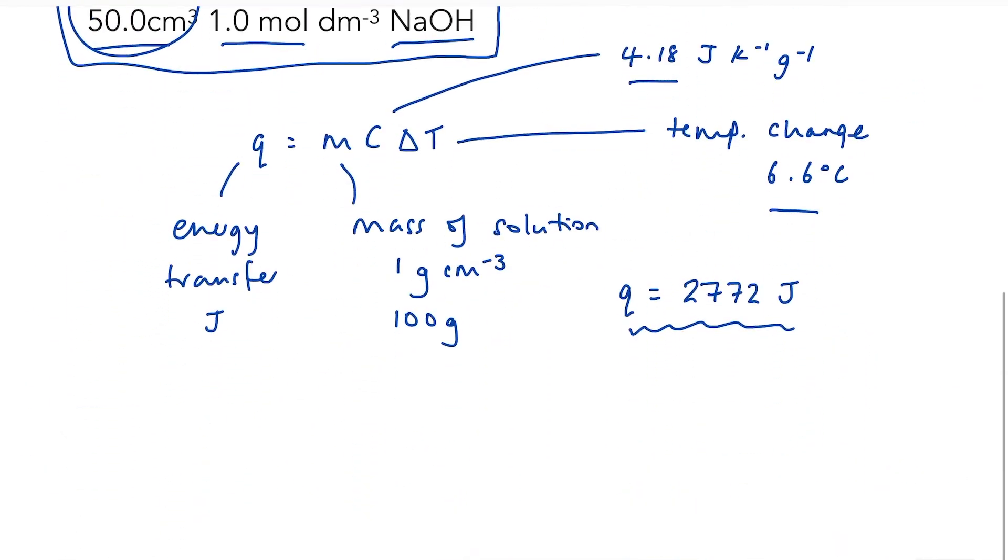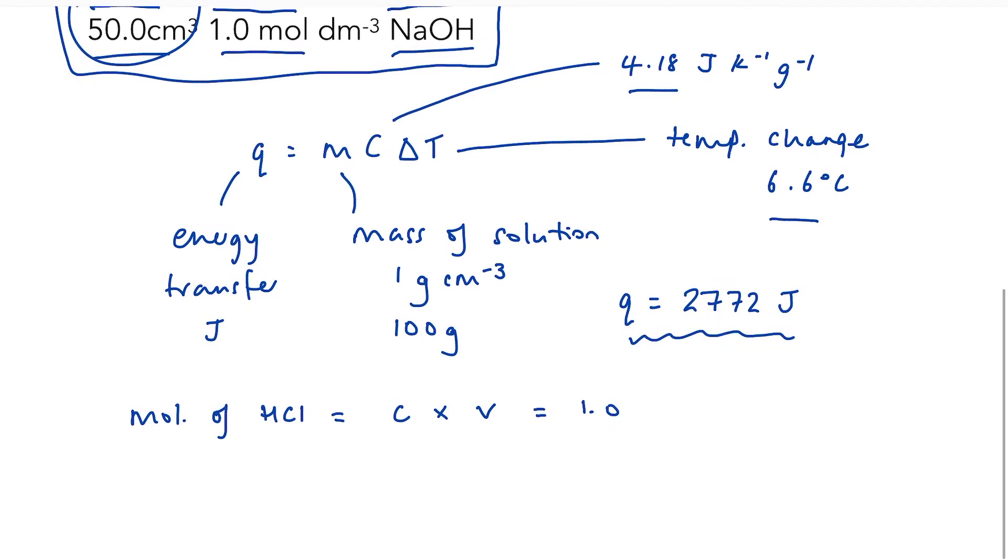So let's have a look at that. So moles of acid, since that's the first one that comes to mine, equals concentration times volume. The concentration was 1.0 mole per decimetre cubed, and the volume was 50 centimetres cubed. But that needs to be in decimetres, so I'm going to divide by 1,000. And that comes out to be 0.05 moles.